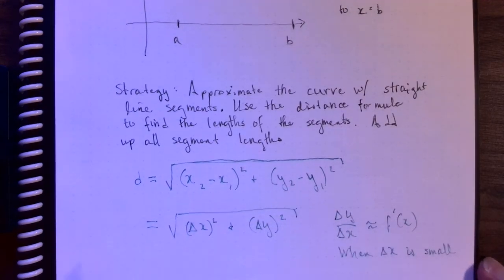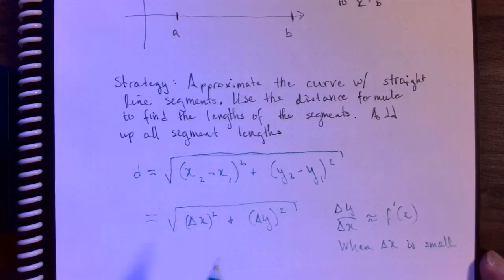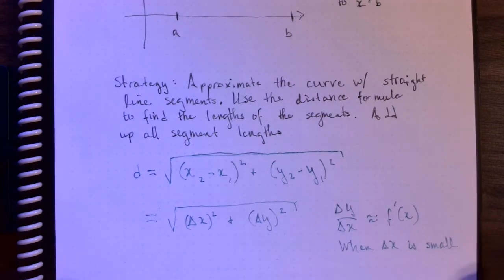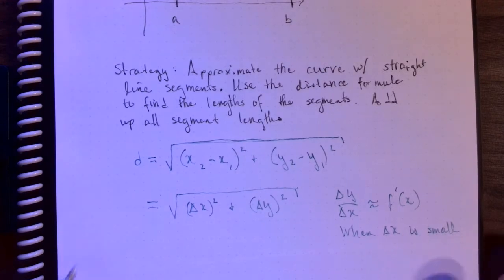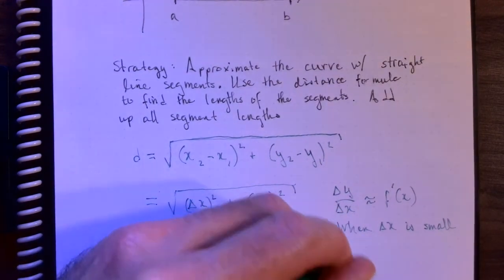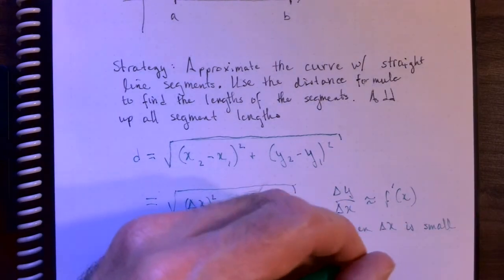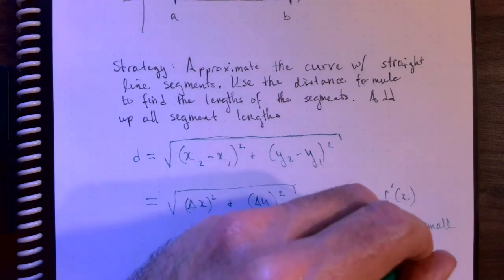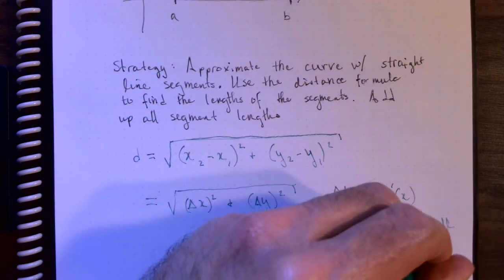The closer delta x gets to being zero, the closer this quantity gets to being the derivative. So if we were to rewrite it just a little bit, alternatively, delta y is approximately equal to f prime of x delta x.